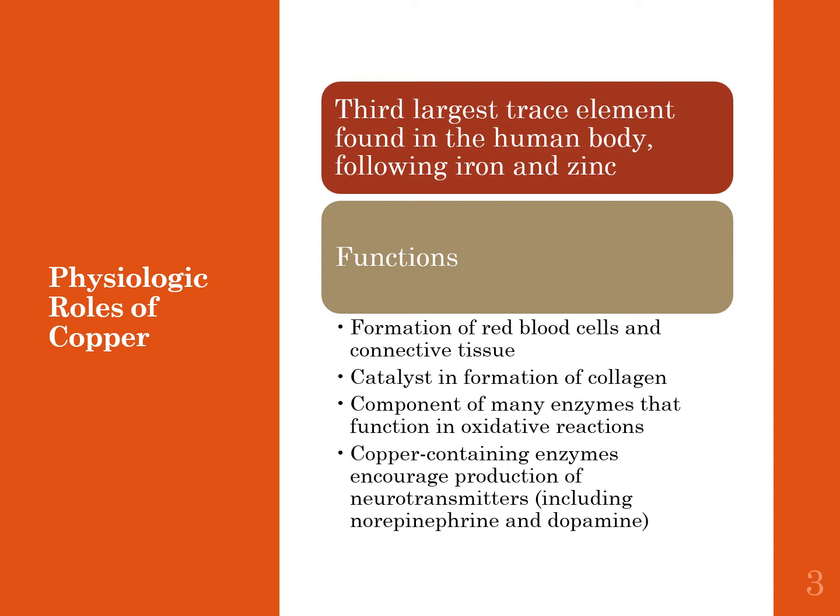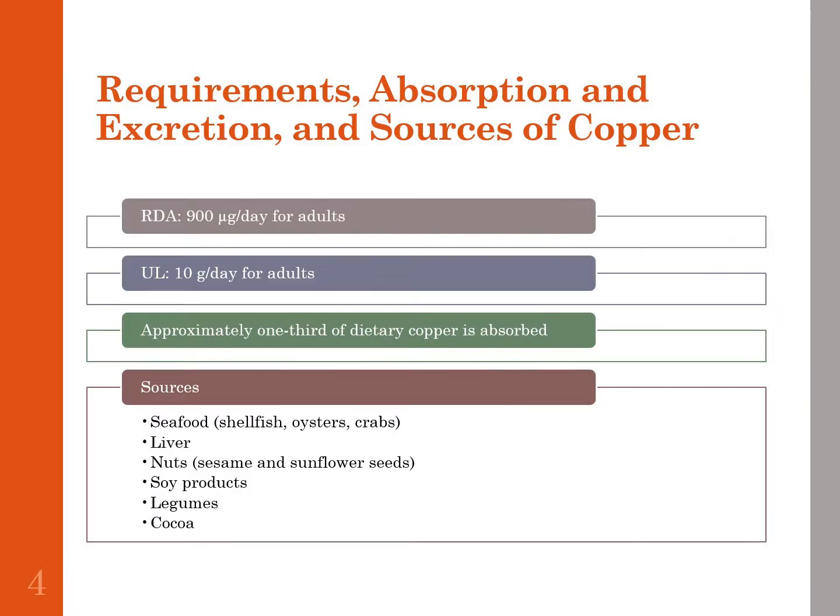Copper-containing enzymes encourage production of neurotransmitters including norepinephrine and dopamine, so without sufficient copper we cannot produce those. It also plays roles in nutrient metabolism and immune function. Copper is readily incorporated into tooth enamel — 0.1 to 230 parts per million in enamel per page 177. Radiographic fluorescence imaging shows increased copper concentration in carious portions of the tooth.